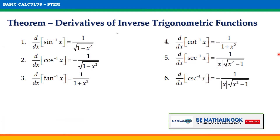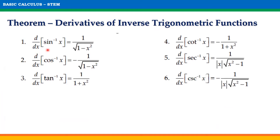Here is a theorem about the derivatives of inverse trigonometric functions that we will be needing in solving some examples later. d/dx of arcsin(x) = 1 / √(1 - x²). d/dx of arccos(x) = -1 / √(1 - x²). d/dx of arctan(x) = 1 / (1 + x²). d/dx of arccot(x) = -1 / (1 + x²).